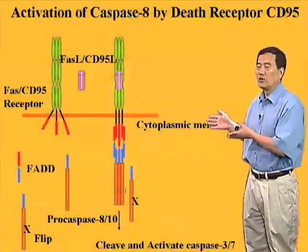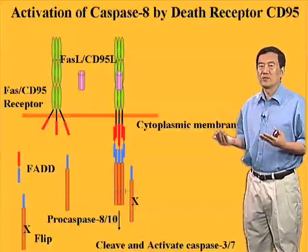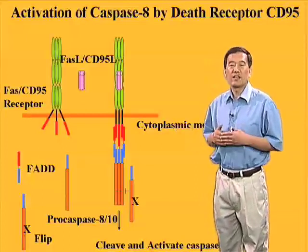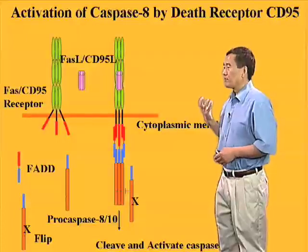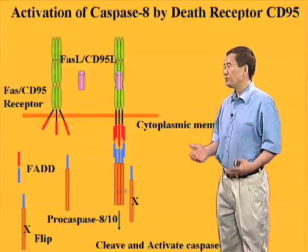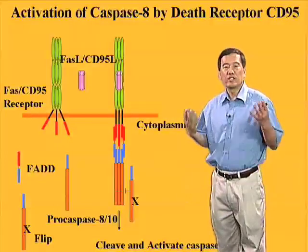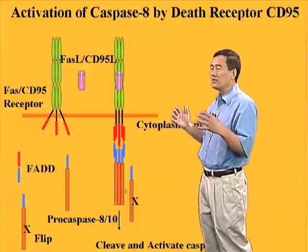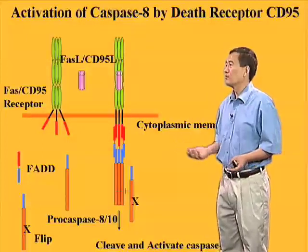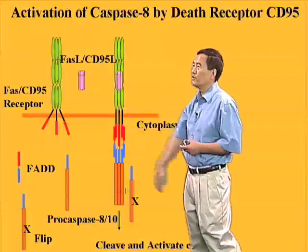I'm going to use a few slides to introduce the extrinsic apoptotic pathway. I mentioned the mitochondrial apoptotic pathway, also called intrinsic apoptosis, because the apoptotic signals initiate from inside the cell — the mitochondria. The extrinsic pathway is where the apoptotic signal is generated from outside the cell, in this case by death-inducing cytokines such as CD95 ligand, also called FAS ligand.